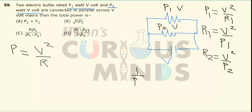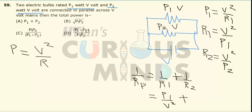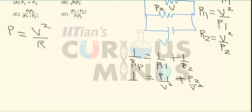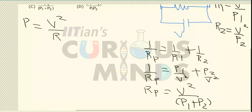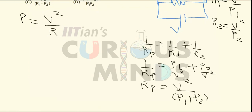Since both bulbs are connected in parallel, 1/Rp = 1/R1 + 1/R2 = p1/V² + p2/V². Therefore, Rp = V² / (p1 + p2).